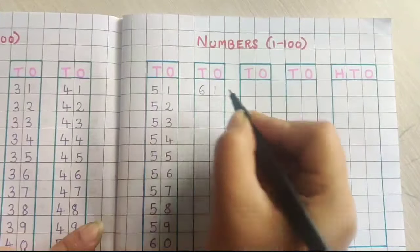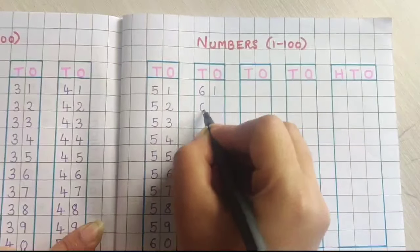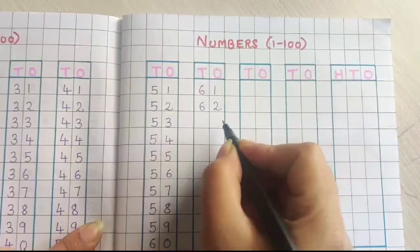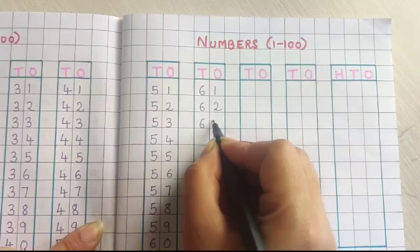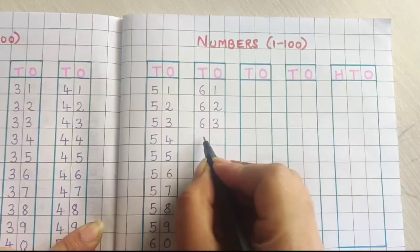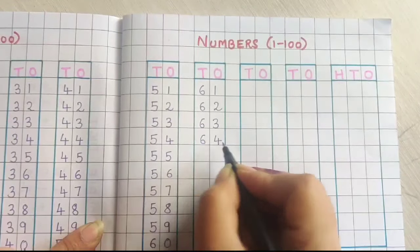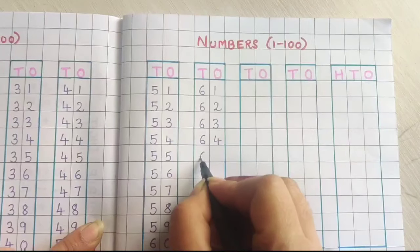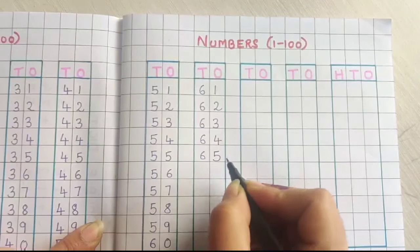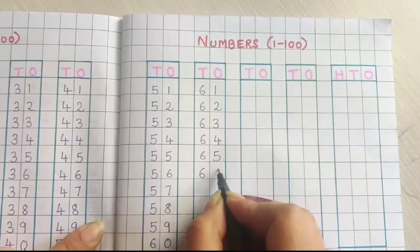6, 1, 61. 6, 2, 62. 6, 3, 63. 6, 4, 64. 6, 5, 65. 6, 6, 66.